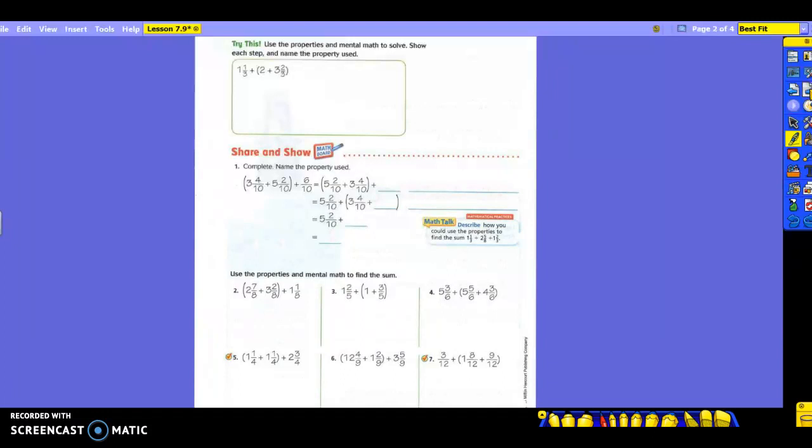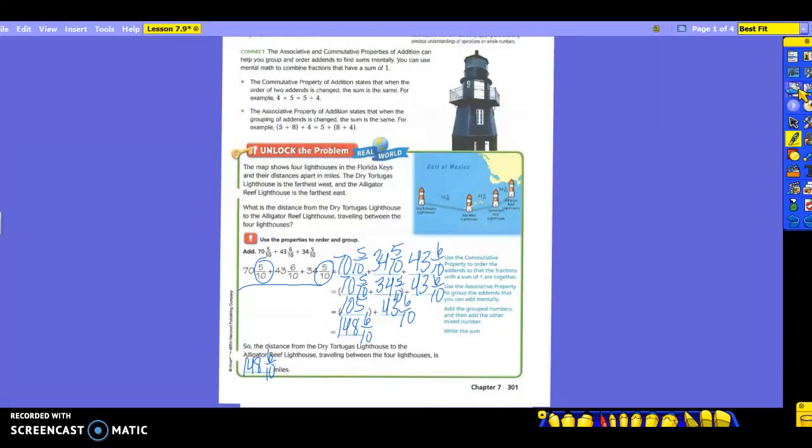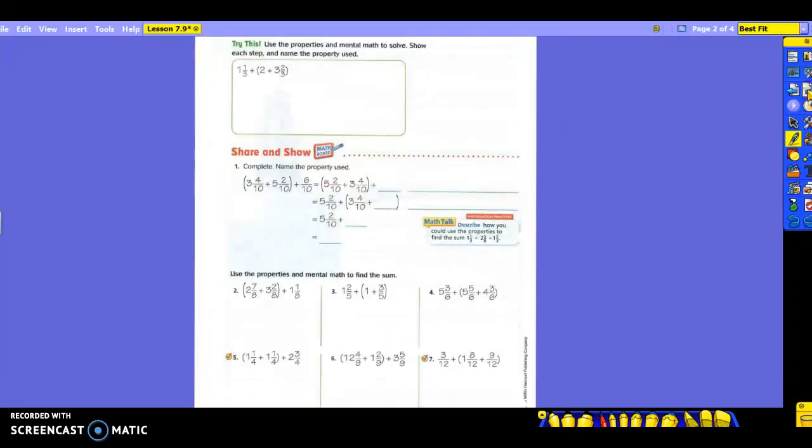Here's another one. We're going to use the properties in mental math to solve it. We're going to show each step and then name the property we use. So I'm going to be thinking about what property did you use. First, I will tell you that over here we used both. We used commutative to switch it around, right? And then we used associative to move the parentheses or to put the parentheses where we want it. And it gave you a step-by-step thing over here. Use commutative property to order the addends so the fractions of the sum of 1 are together. So that's what we did here. Then you're using associative to group them and then add the group numbers and write the sum.